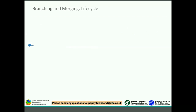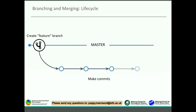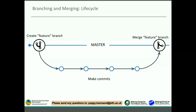Starting with branching and merging - here's an overview of the life cycle. You start your repository at a particular point and create a branch, in this case called 'feature'. Your master is then free to carry on independently of your feature branch. You make commits, create the feature you've specified, and then merge that feature back into your master branch. This is the general life cycle and overview of branching and merging in git.